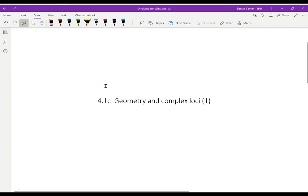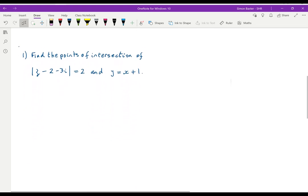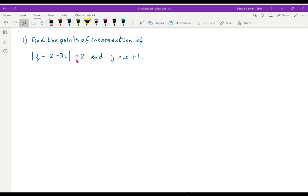Here we're going to look at some geometry and some complex loci. Let's take this question. Suppose we want to find the points of intersection of mod Z minus 2 minus 3i equals 2 and y equals x plus 1.